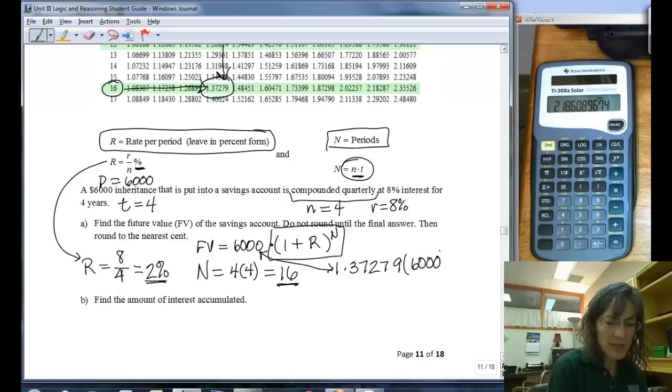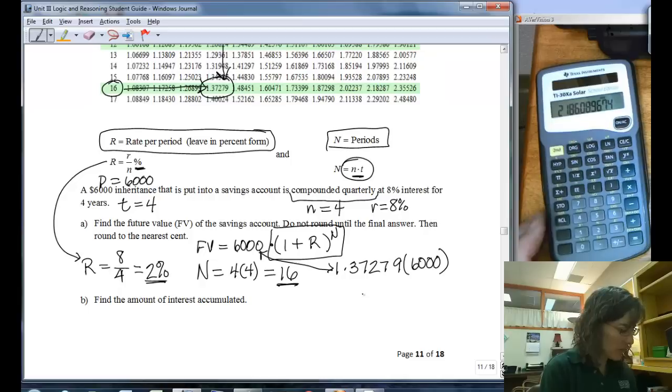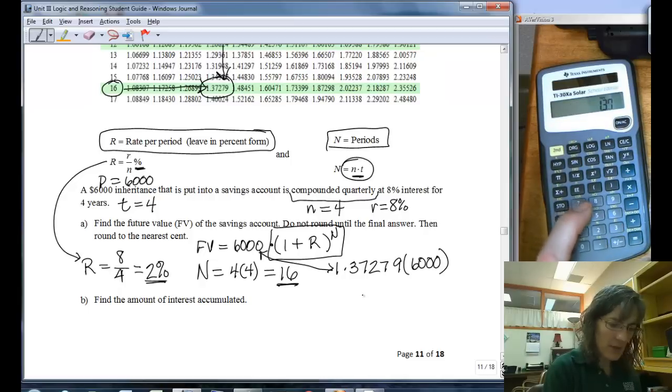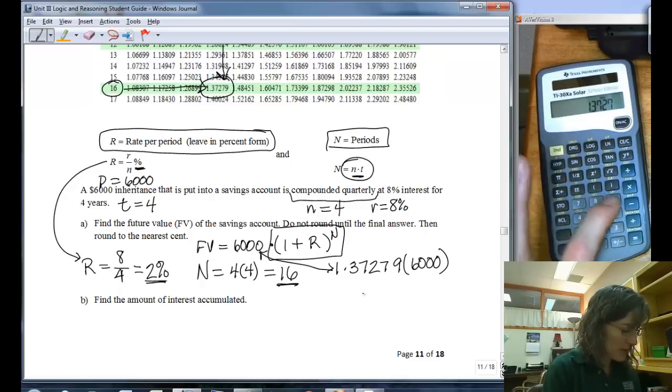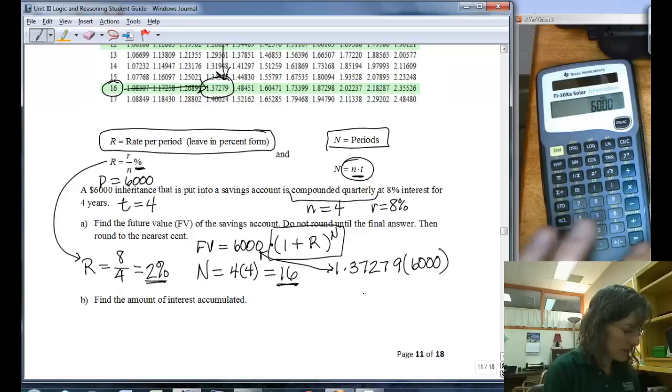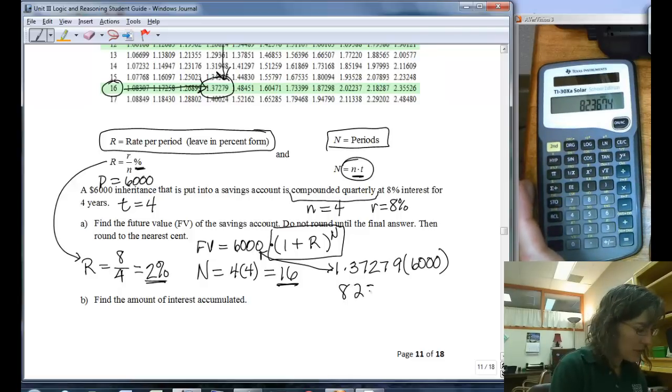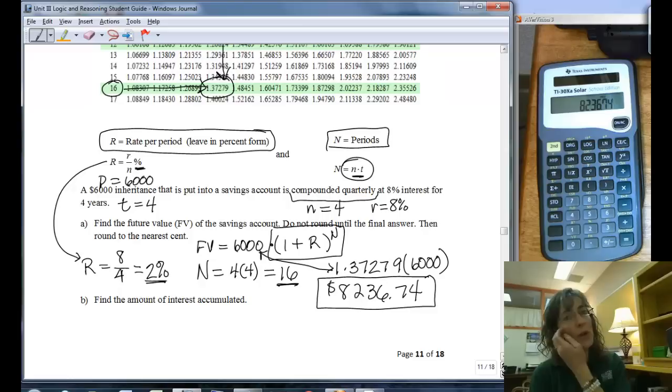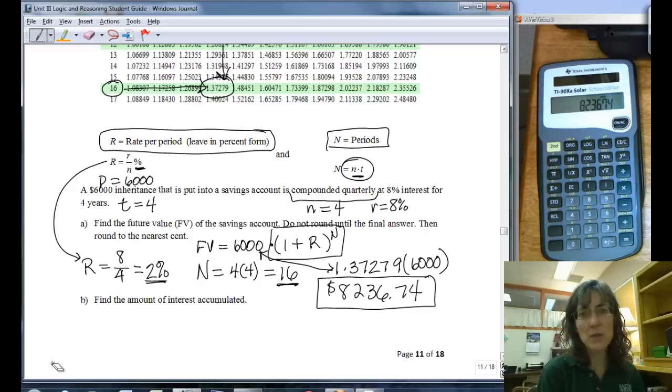So I'm going to multiply by 6,000. I'll plug in that value from the table, 1.37279 times 6,000. And I got 8236.74. And there was nothing to round because it didn't carry out the value any further. But if I was going to invest $6,000 at these rates and times, I should end up with $8,236.74 after 4 years.